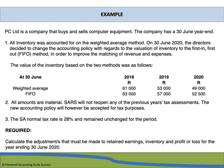The value of inventory under each method was as follows. Under the weighted average method: 2018 — R61,000; 2019 — R53,000; 2020 — R49,000. Under the FIFO method: 2018 — R63,000; 2019 — R57,000; 2020 — R52,500. All these amounts are material, and SARS will not reopen any previous years' tax assessments.